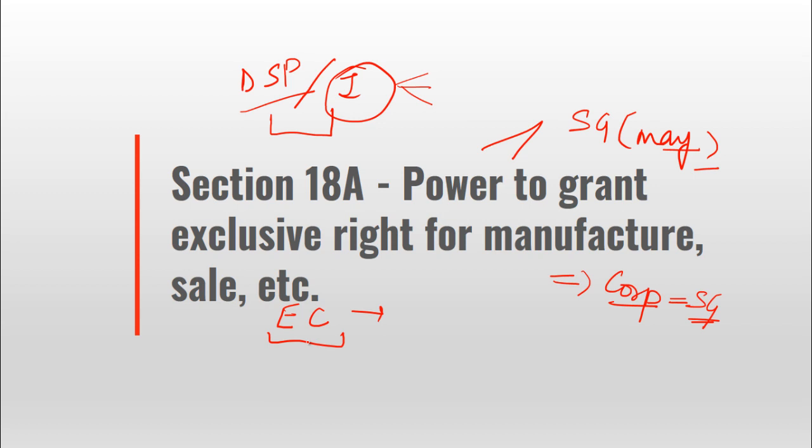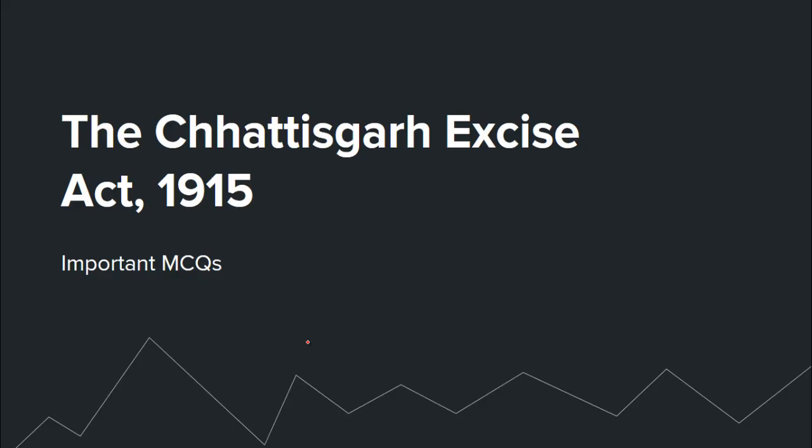So remember clearly: license grant power is with the excise commissioner, and exclusive right grant power is with the state government. These are the detailed provisions added via this amendment.